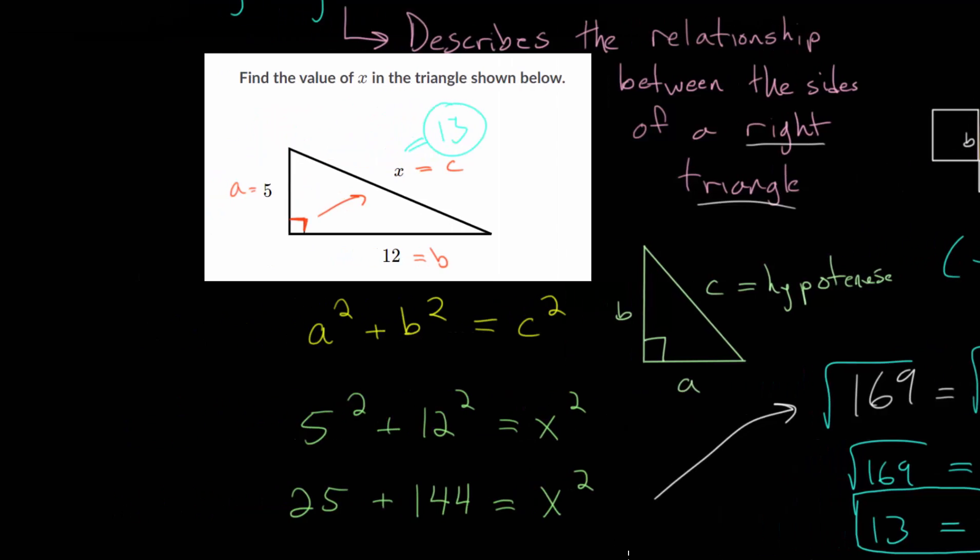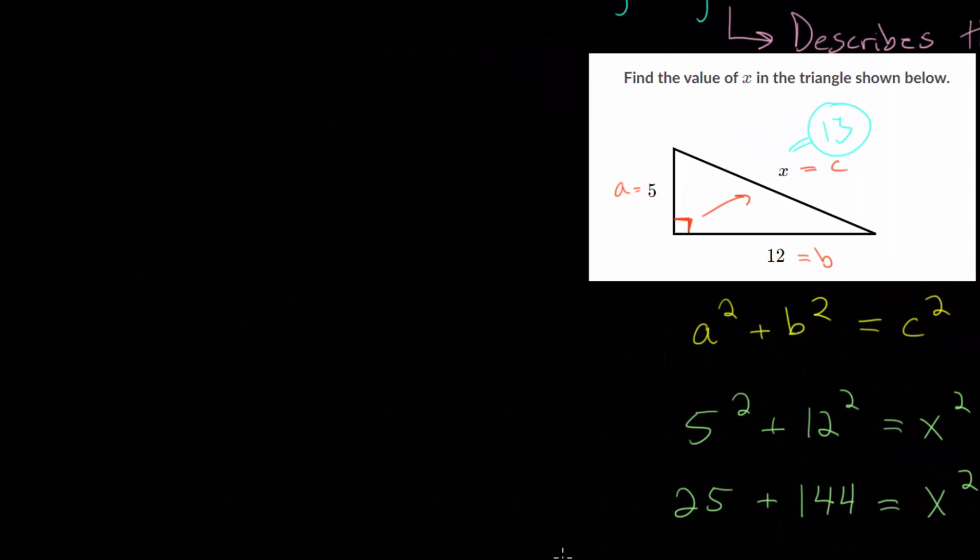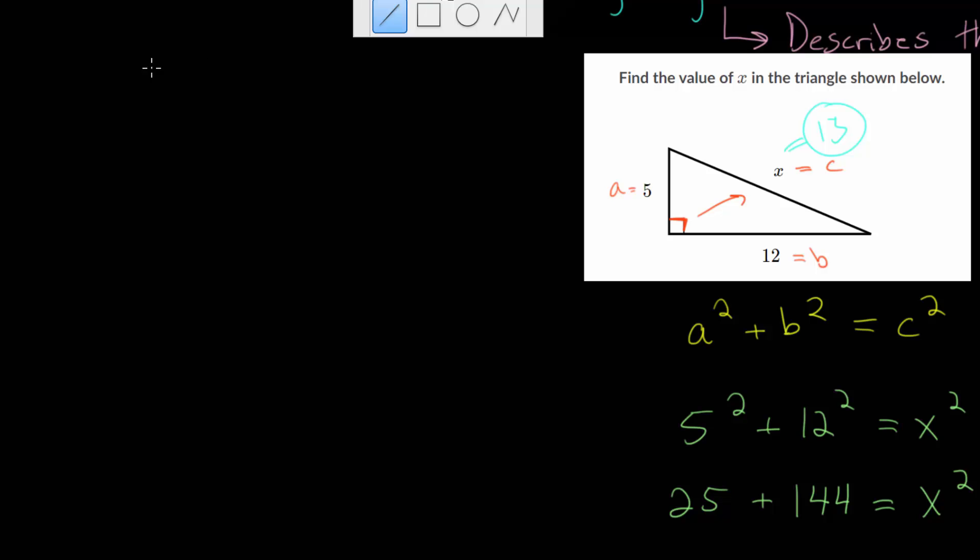Now I do want to look at one more example before moving on. So let's create a right triangle here. And remember, the triangle does have to be a right triangle, it does have to contain a right angle. And let's say this time we do have the hypotenuse and we're missing one of the legs.